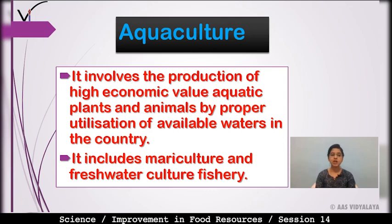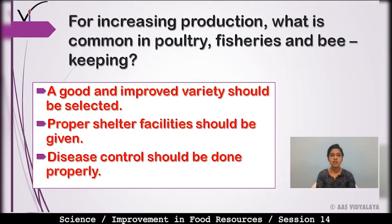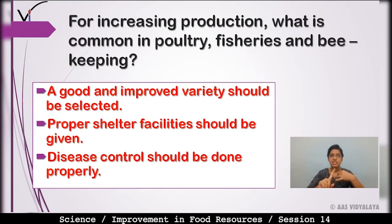What is common between poultry, fisheries, and bee keeping? A good and improved variety should be selected — sabse pehle good aur improved variety ko select karna hota hai. Proper shelter facilities should be given. And disease control should be done properly. In teeno cheezein ko dhyan mein rakhenge toh poultry, fish, and bee keeping mein production increased quantity mein milega.